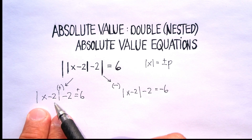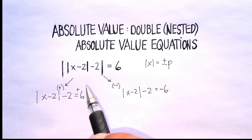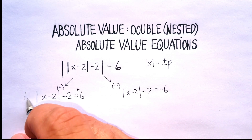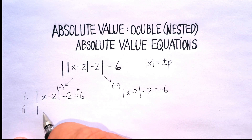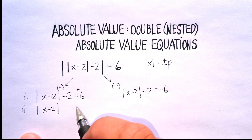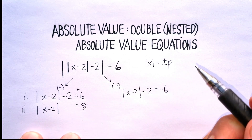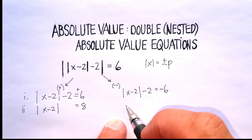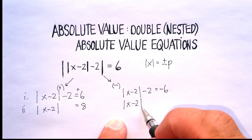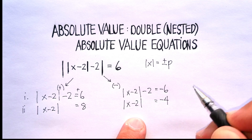So let's go ahead and add 2 to both sides. That's step 1, and here's step 2. We're going to get the absolute value of x minus 2 is equal to positive 8 — just adding numbers to both sides. And over here, the absolute value of x minus 2 is going to be equal to negative 4.